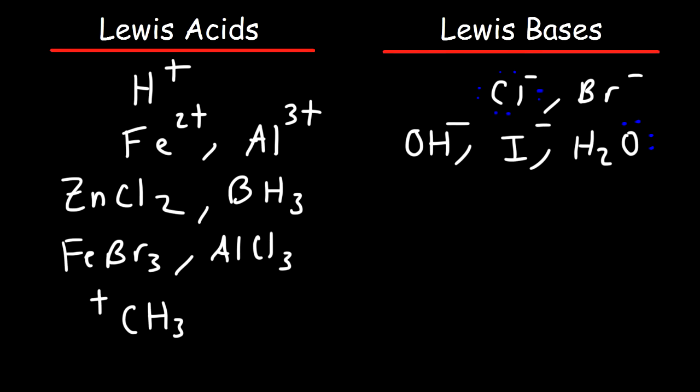The methyl carbocation is a Lewis acid. A carbanion is a Lewis base. Ammonia is another Lewis base. Lewis bases, they're basically nucleophiles. They're electron rich and Lewis acids are electrophiles. They're electron poor.